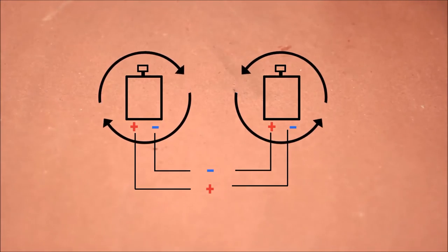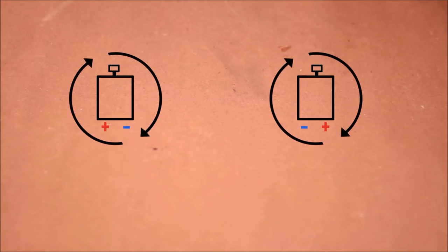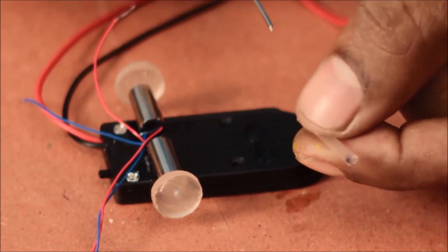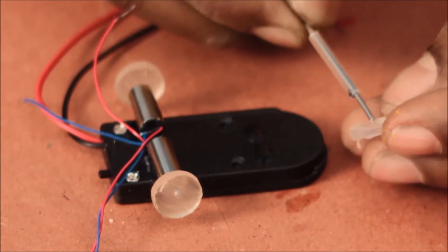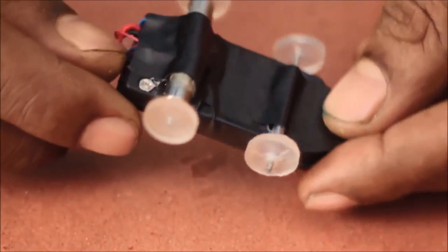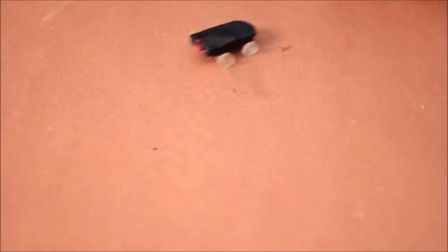Since the motors are going to be facing opposite, the polarity of one of the motors needs to be reversed. The motors and the front wheel are assembled on the battery pack. The wires are then concealed with insulation tape and we have a tiny car ready to roll.